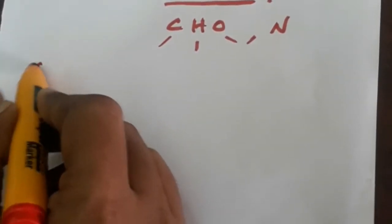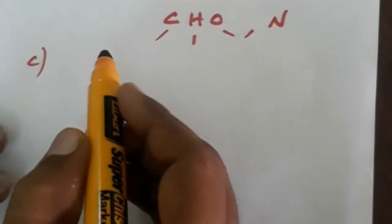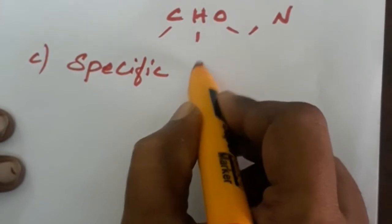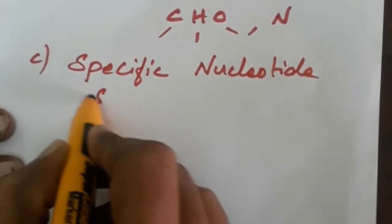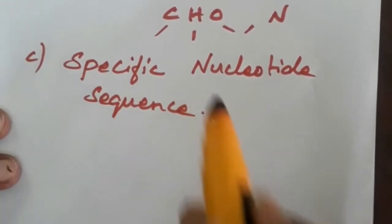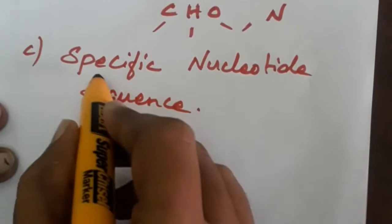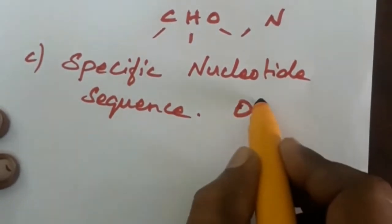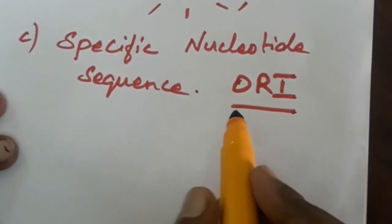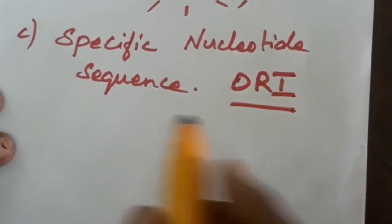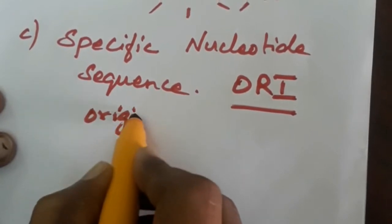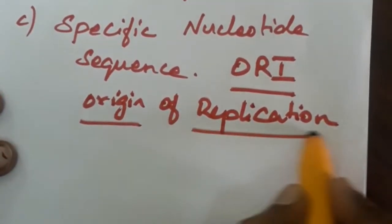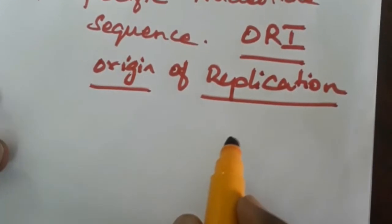Then what is the next property? The next property is the presence of a specific nucleotide sequence. We are calling this specific nucleotide sequence, which is present on the plasmid, as ORI — which means Origin of Replication Sequence.